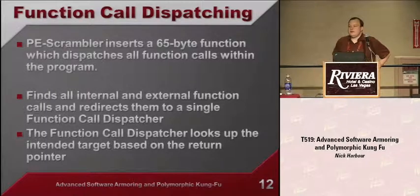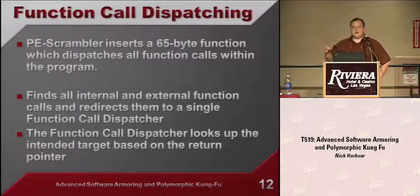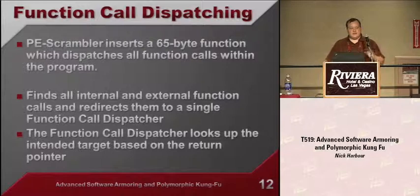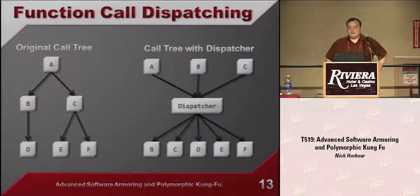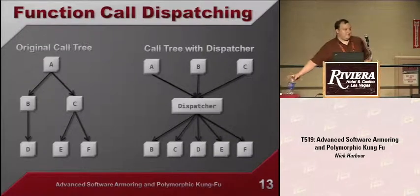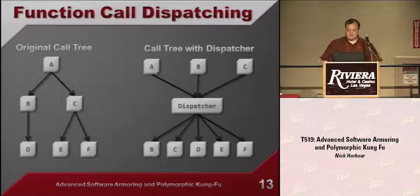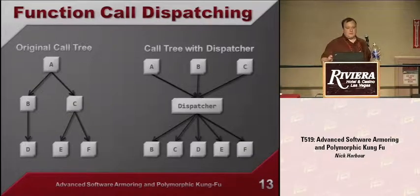The first technique I call function call dispatching. With my disassembly, I find every function call in the program — whether it's to an internal function or something from the import table like an external DLL. I can remap each of those instructions to a tiny 65-byte function that I insert into the binary, and this function then calls whatever it was supposed to call. If you dispatch all these calls and remap them to point to the dispatcher, the call tree is completely obliterated — it all looks like everything is just calling one function. This also opens up further avenues like function-level packing.